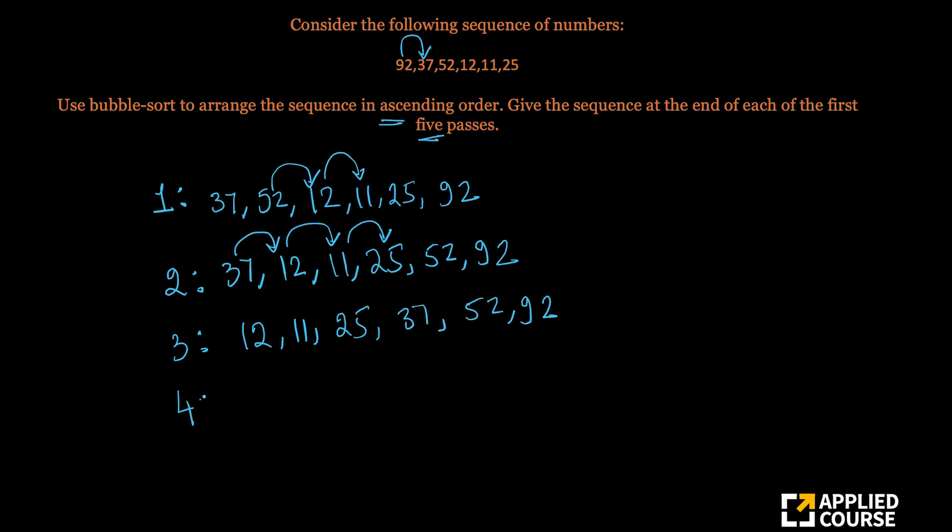What about the fourth swap? 12 would get jumbled here. You will have 11 here and 12 here, but 12 will not get swapped with 25 because 25 is larger. So you are left with 25, 37, 52 and 92.